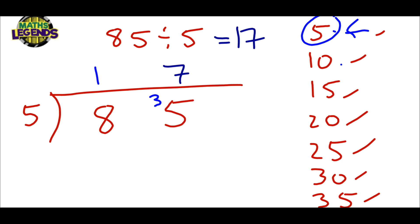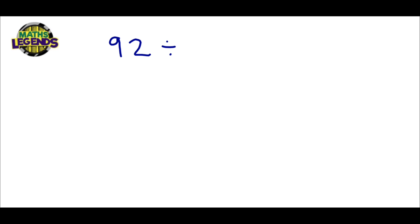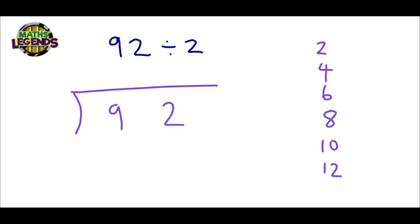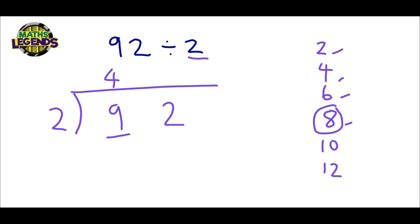Let's look at 92 divided by two. We write out our two times tables on the side: two, four, six, eight, 10, 12. We draw the bus stop with 92 inside and two outside. Twos into nine: two, four, six, eight, 10 — we've gone past it, so we stop at eight, which is four numbers, giving us four. But we only reached eight and wanted nine, so one gets carried forward. The next question becomes twos into 12: two, four, six, eight, 10, 12 — that's six numbers. So our answer is 46.